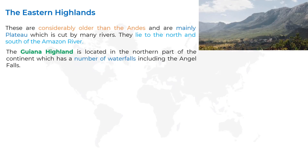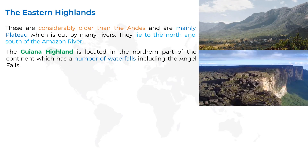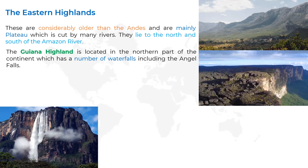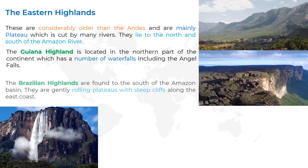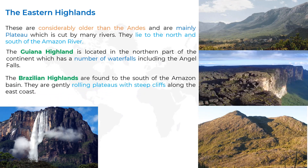The Guiana Highlands are located in the northern part of the continent and have a number of waterfalls, including the Angel Falls. The Guiana Highlands are found to the south of the Amazon Basin and are gently rolling plateaus with steep cliffs along the east coast.